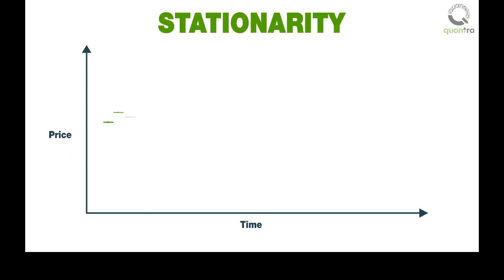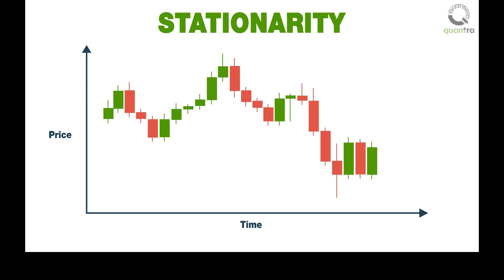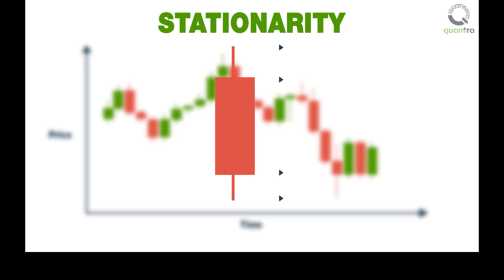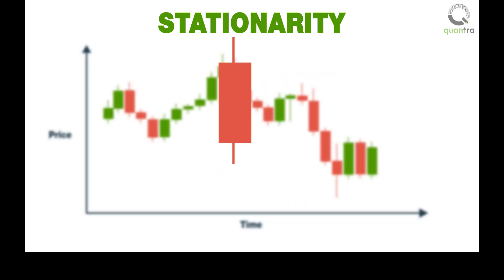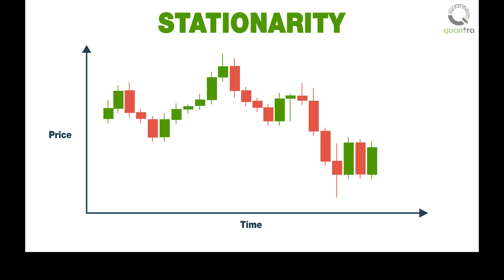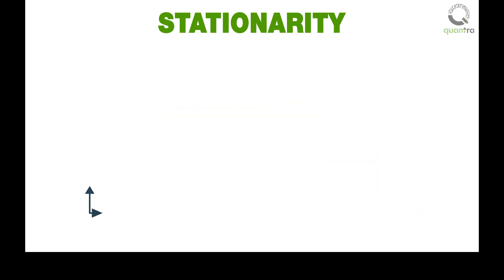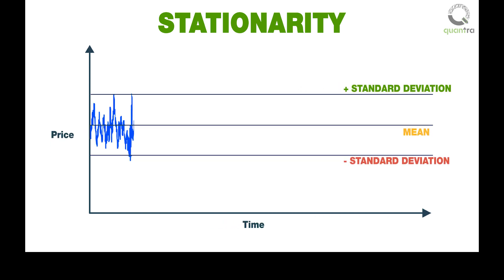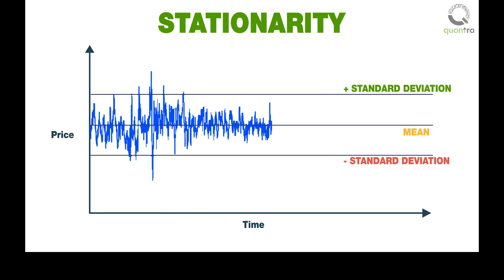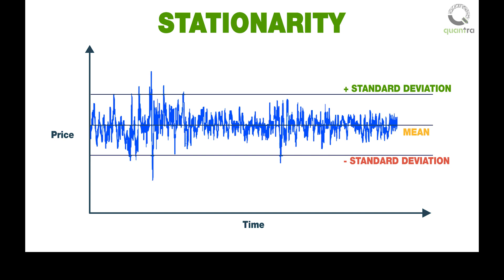The stock market's data is usually referred to as time series data — that is, a discrete data type which is indexed in time. For example, daily OHLCV data is time series data indexed at every trading day in a year. A time series is called stationary if its standard deviation from the mean doesn't increase too fast with time.